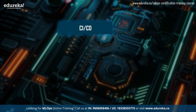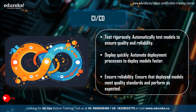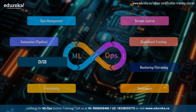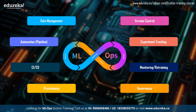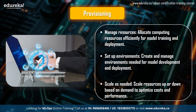Then we have continuous integration and continuous deployment. CI/CD is all about automation — it automatically tests your models to make sure they meet quality standards before deploying them quickly and consistently. This way you can be confident that the models you deploy will perform as expected. Monitoring and retraining are crucial for maintaining the accuracy and performance of your deployed model over time. You can monitor performance in real time, and if issues are detected, retrain or update the models as needed — ensuring they remain reliable and effective in production. Provisioning is all about efficiently allocating computing resources for training and deploying your models. You can set up and manage development and deployment environments and scale resources up or down based on demand, helping optimize cost and performance.